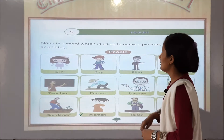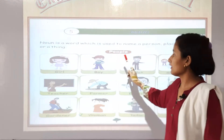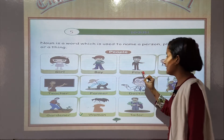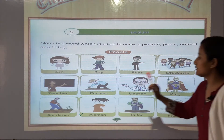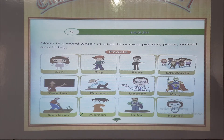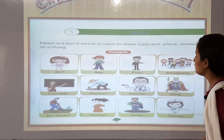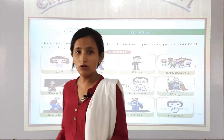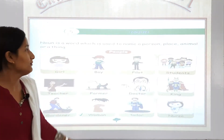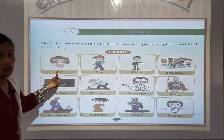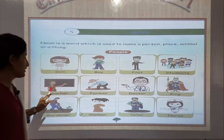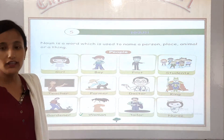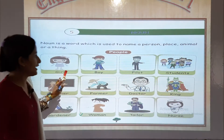For example, people. You can see: girl, boy, pilot, students, teachers, farmer, doctor, king, gardener, woman, tailor, nurse — they have their names. So you can see these names of people: girl, boy, pilot, students, teachers, farmer. They are persons, so they have their names.